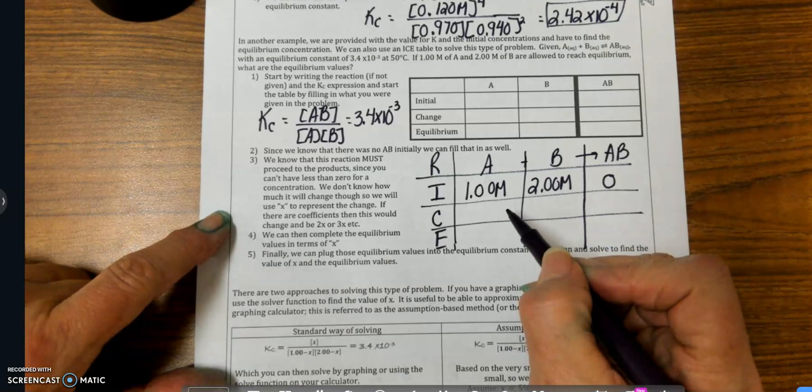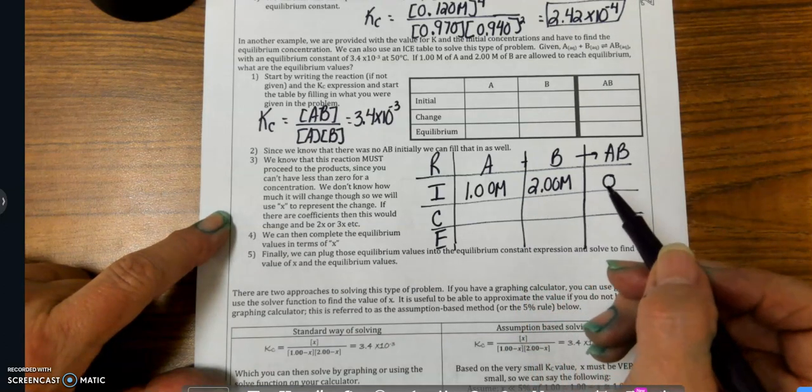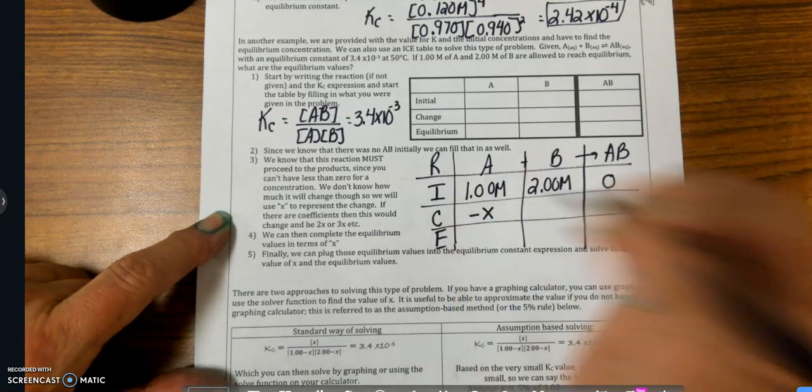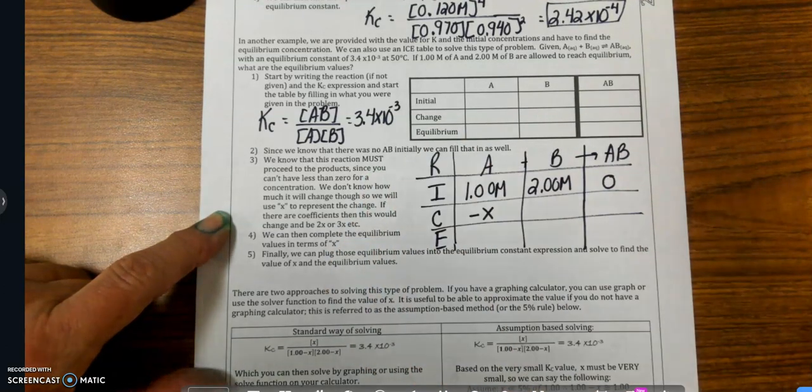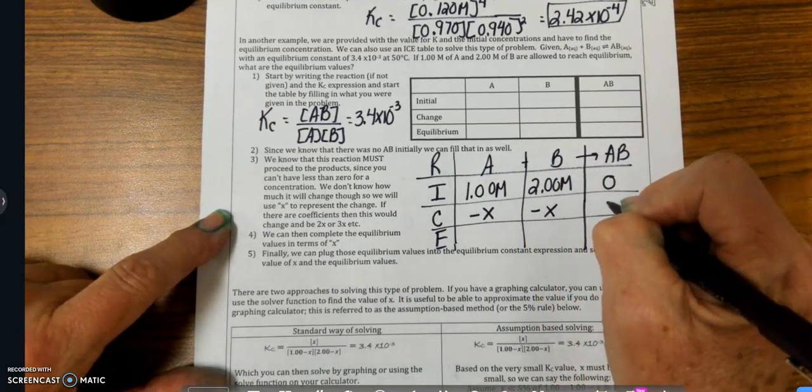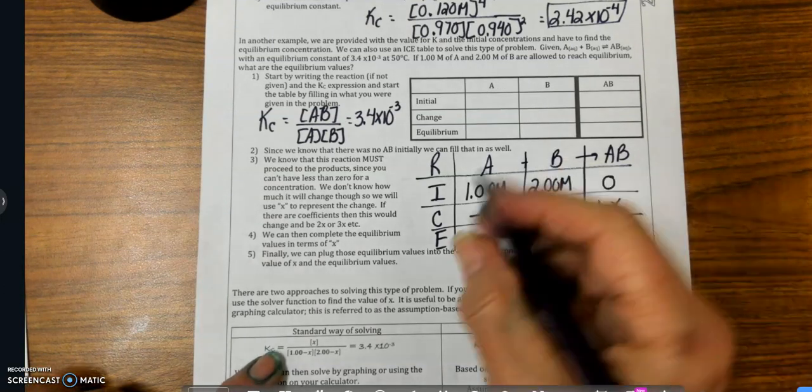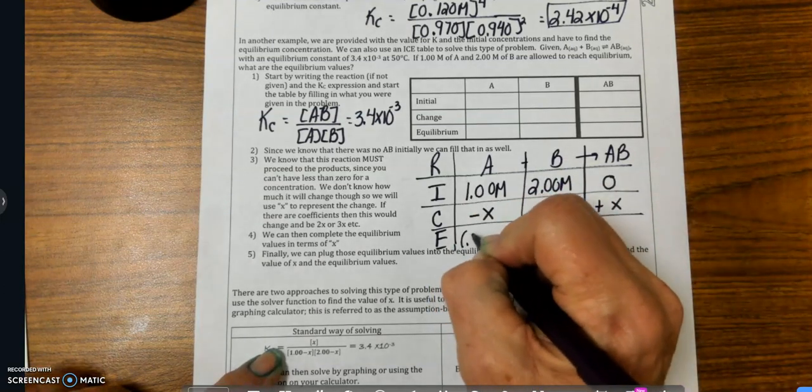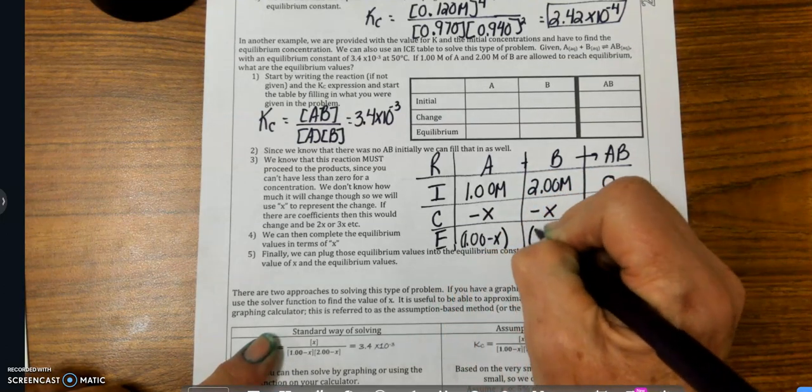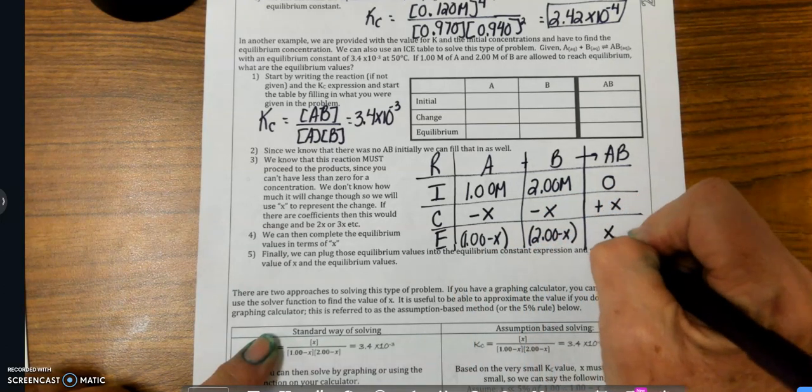Again, I've got a change that happens, and the change is related to the stoichiometry of the reaction. If I call the change X, then this is going away, so that's minus X, because my reaction is going in this direction. This is also minus X, and this one's going to be plus X. So the equilibrium concentration is going to be 1 minus X, 2 minus X, and X.